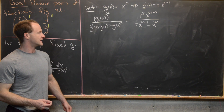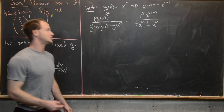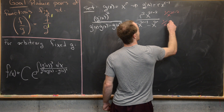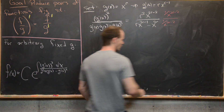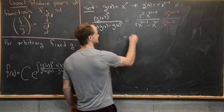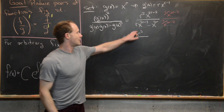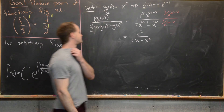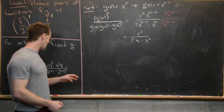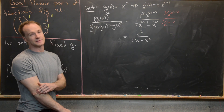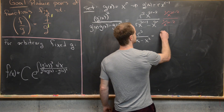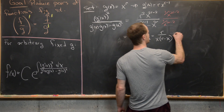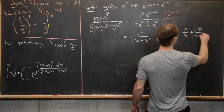We can factor out x to the 2r minus 2 from numerator and denominator, leaving r squared in the numerator and r times x minus x squared in the denominator. This simplifies to r squared over x times (r minus x). This screams partial fraction decomposition — we decompose it as A over x plus B over (r minus x).